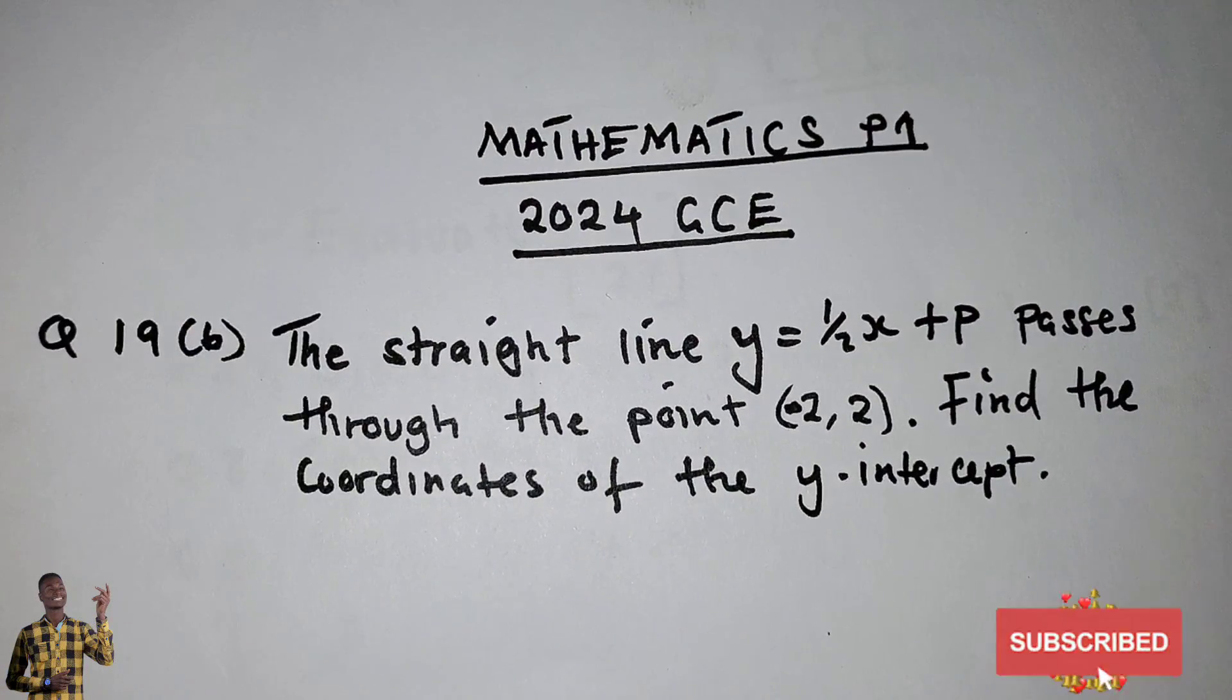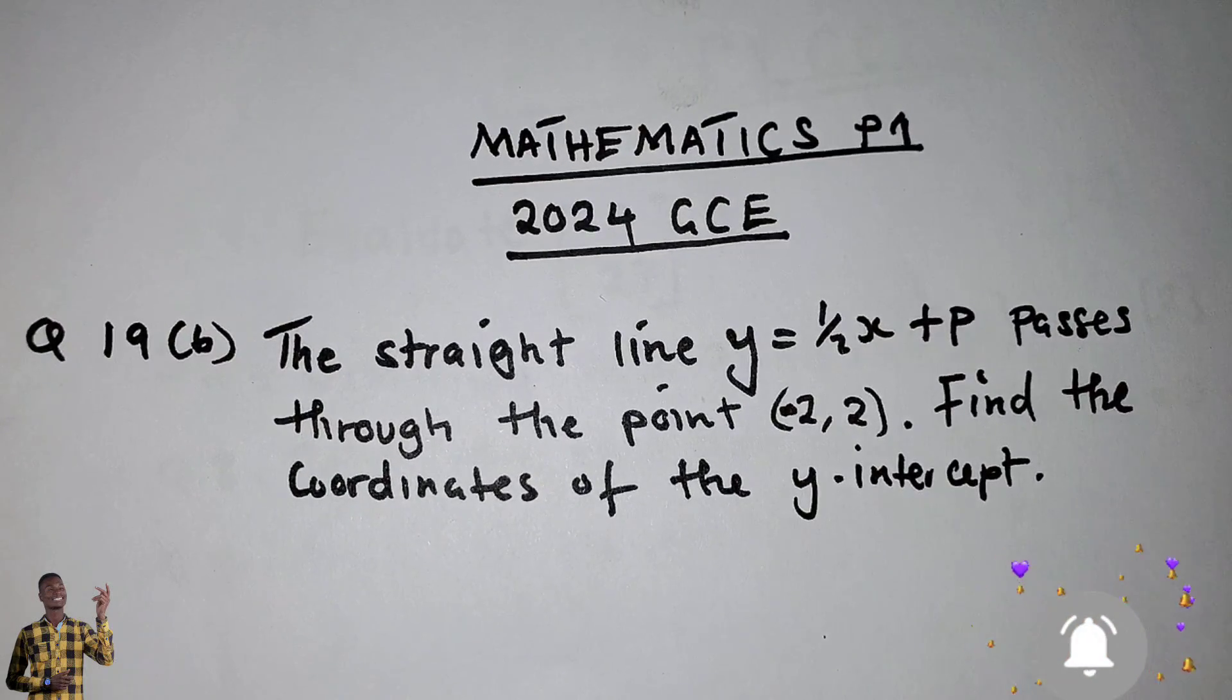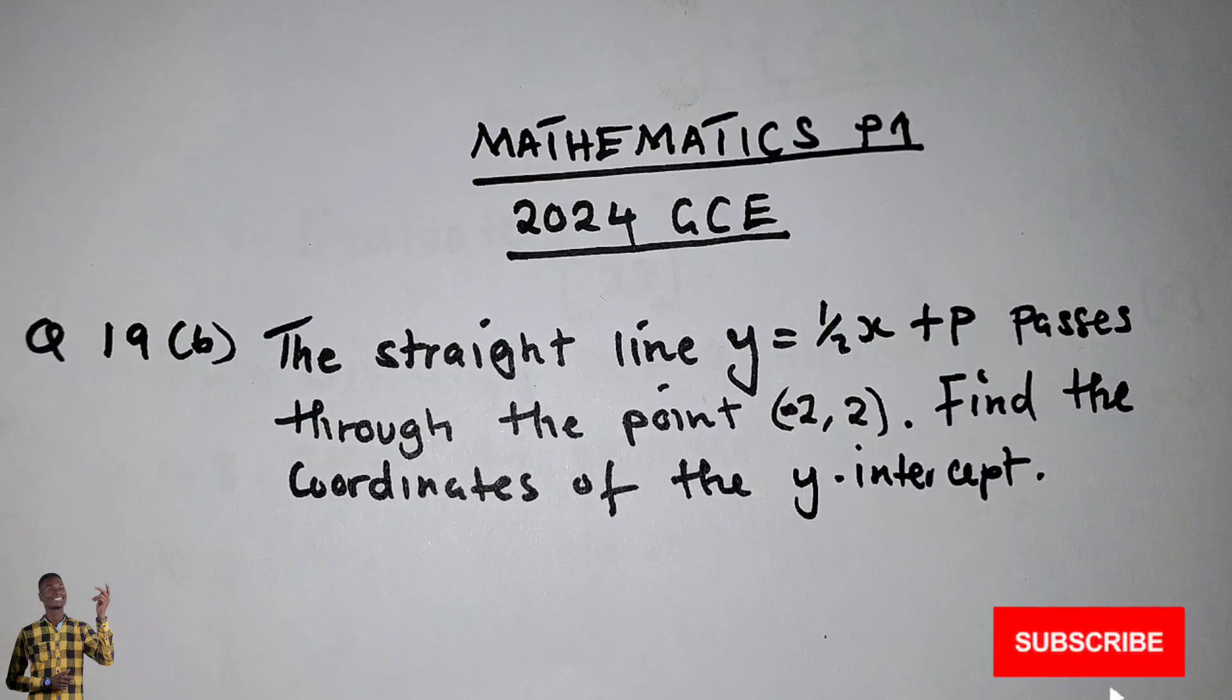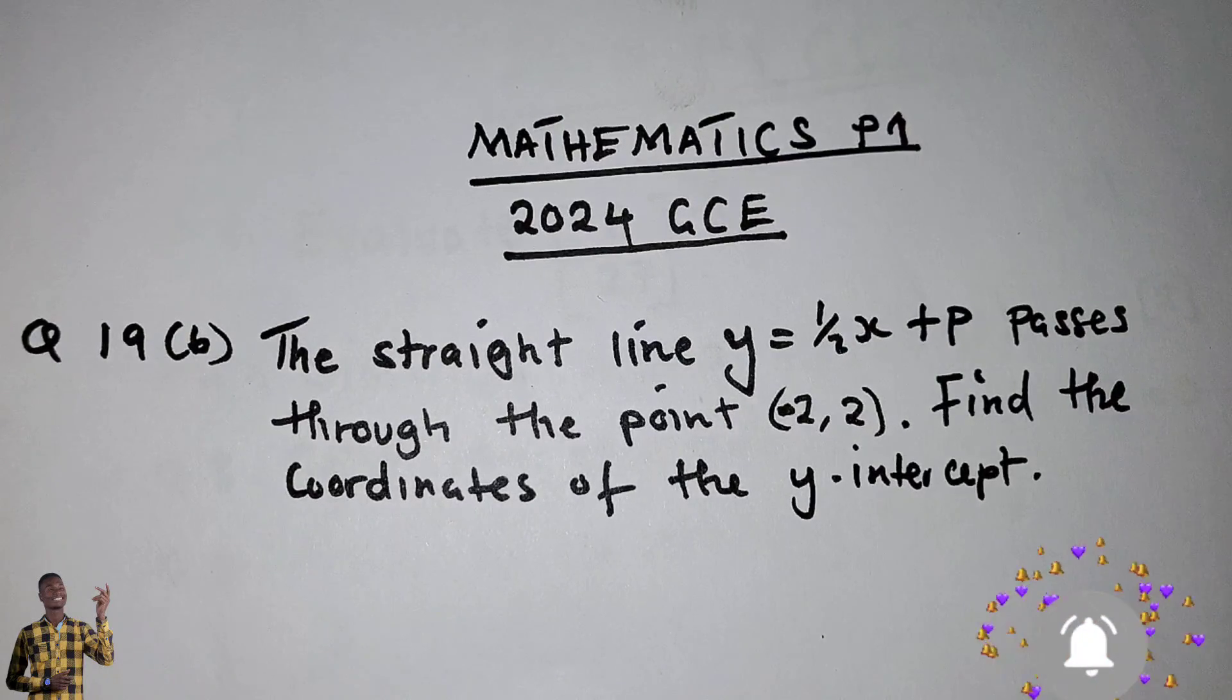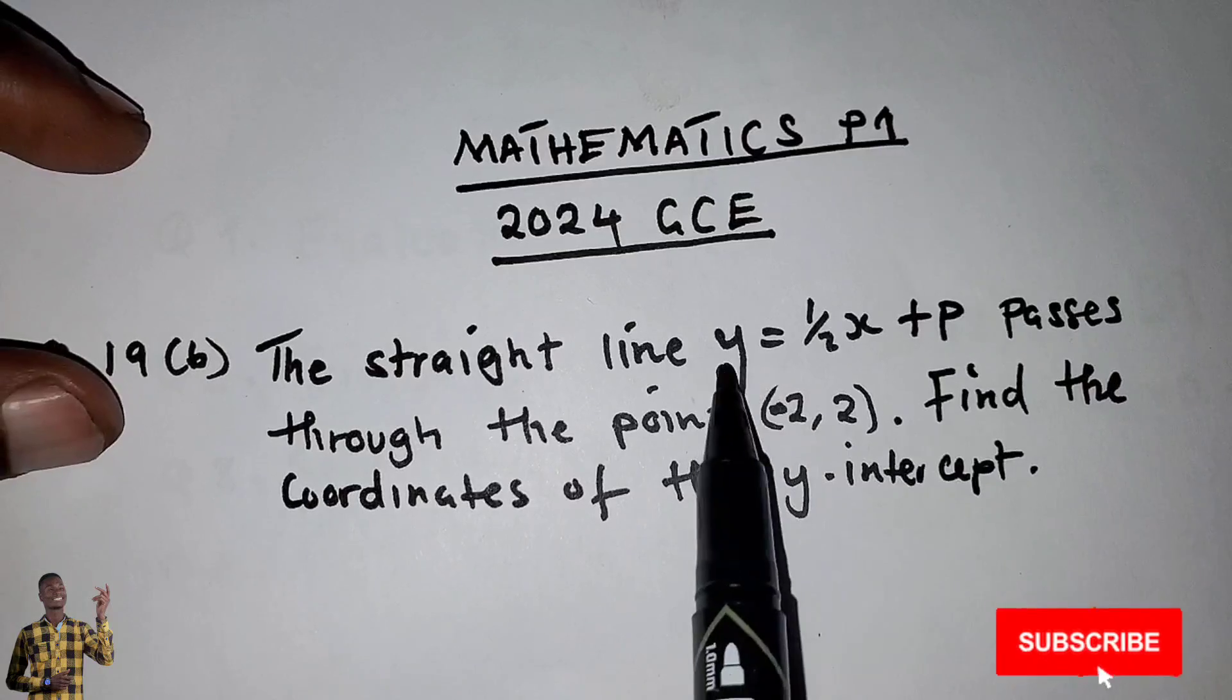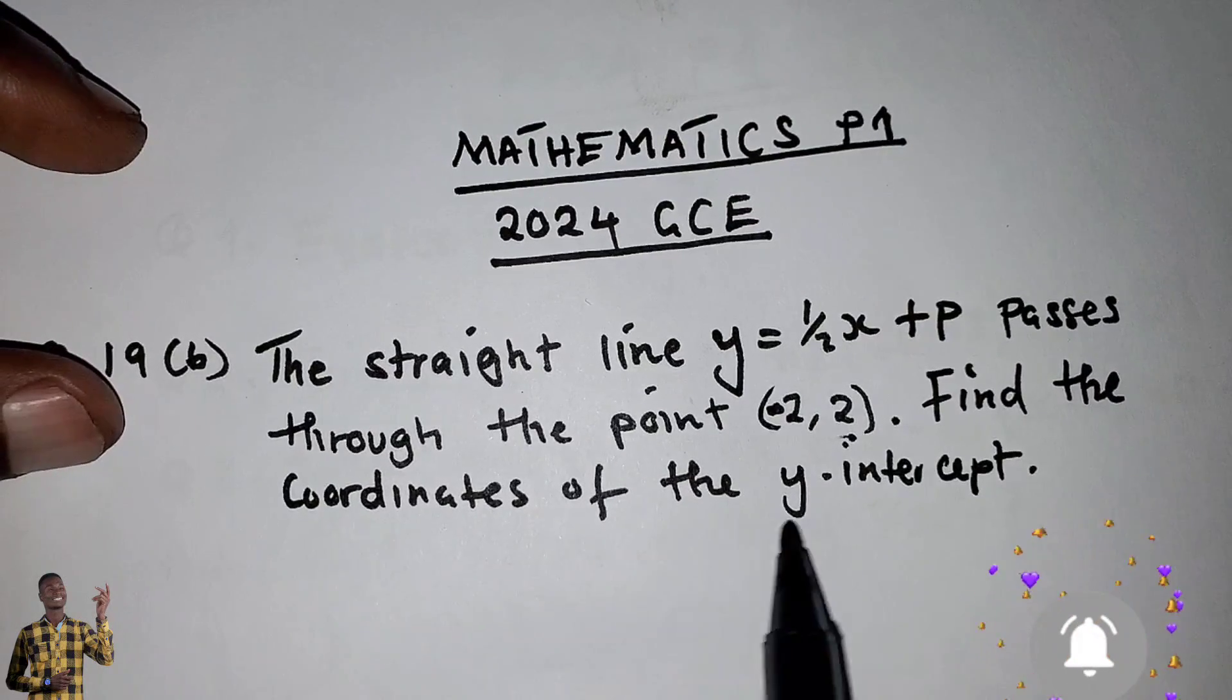Okay, let's solve question 19B of 2024 GCE Paper 1 Mathematics under coordinate geometry. The straight line y = 1/2x + P passes through a given point. We need to find the coordinates of the y-intercept.